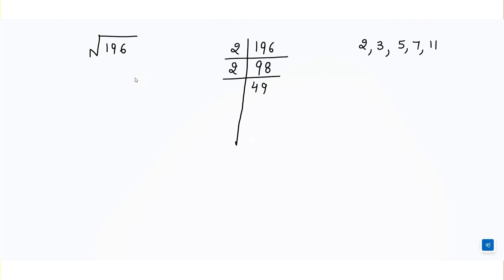Now 49 is not divisible by 2, not by 3, not by 5 — it is divisible by 7. So we divide 49 by 7, we get 7. Then again 7 is divisible by 7, so we get 1. We have to make sure that at the end we should get a 1.